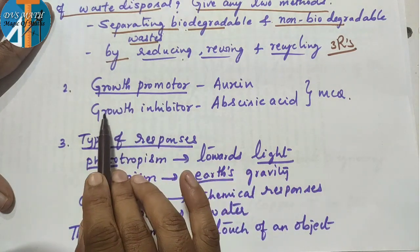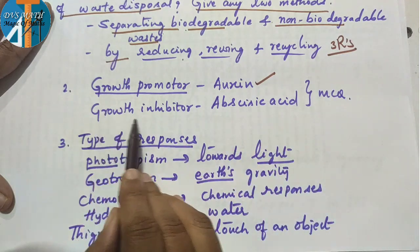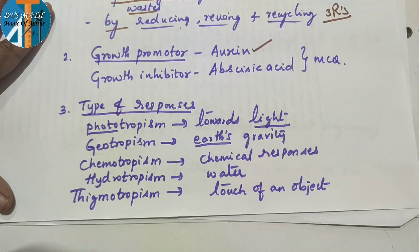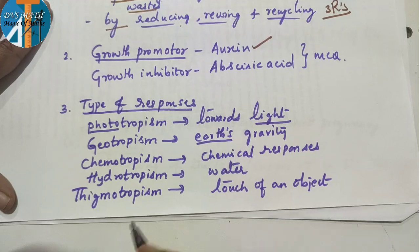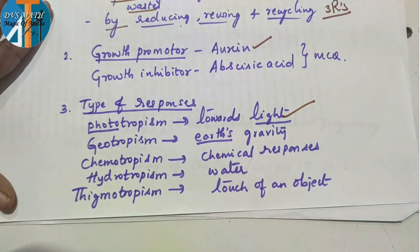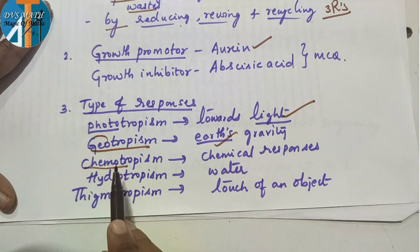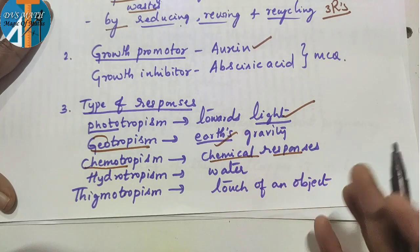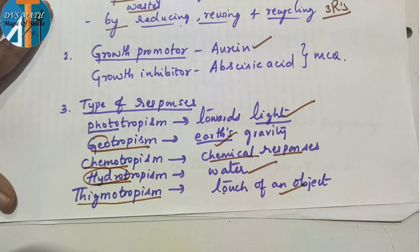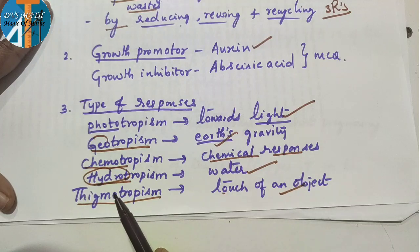Growth promoters are auxins. Growth inhibitors are abscisic acid. Types of tropisms: phototropism — response to light; geotropism — response to earth/gravity; chemotropism — response to chemical; hydrotropism — response to water; thigmotropism — response to touch of an object.